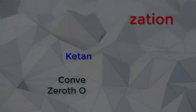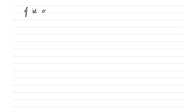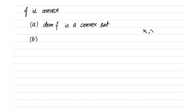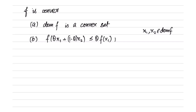Let us now come to convex functions. A function f is said to be convex if it satisfies the following two conditions. First, the domain of f should be a convex set. Second, for any two points x1, x2 in the domain of f, it should hold that f(θx1 + (1−θ)x2) ≤ θf(x1) + (1−θ)f(x2) for θ between 0 and 1.